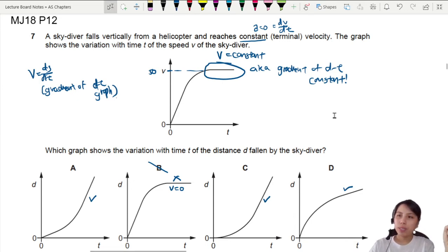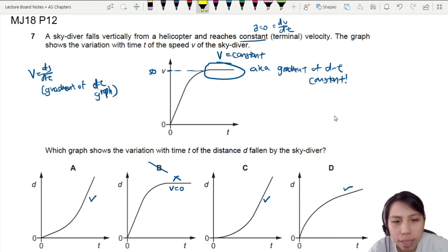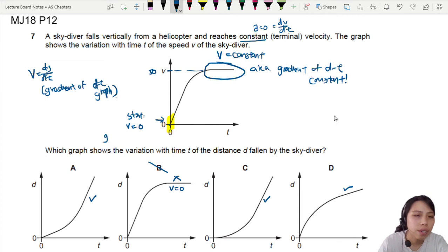No, we still got velocity. It is some value. I don't know, maybe 50 or whatever. So no, velocity did not become zero. That's out. C says gradient is constant. And D says gradient is constant. Those parts still okay. How do we choose between these last three? The hint lies in the starting point.